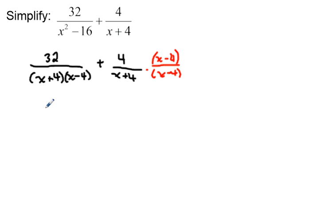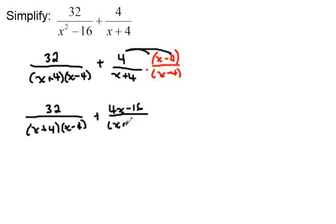That will give me a new expression down here where I have 32 divided by x minus 4 and x plus 4, plus, since I'm using the distributive property up here, 4x minus 16. And now I've got that common denominator of x plus 4 and x minus 4.